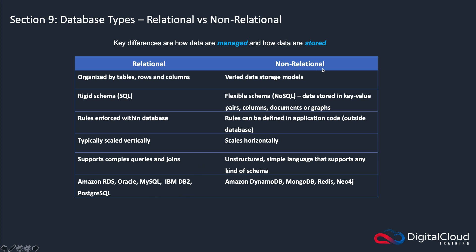With non-relational databases, you have a varied data storage model, and that means you have what's called a NoSQL or flexible schema. The schema is not rigid like it is in relational databases. Data can be stored in a number of formats — key-value pairs, columns, documents, or graphs. You can define the rules in the application itself rather than in the database, so it's less rigid and you don't have to define it all upfront. Instead, you can modify application code if you need to make changes.